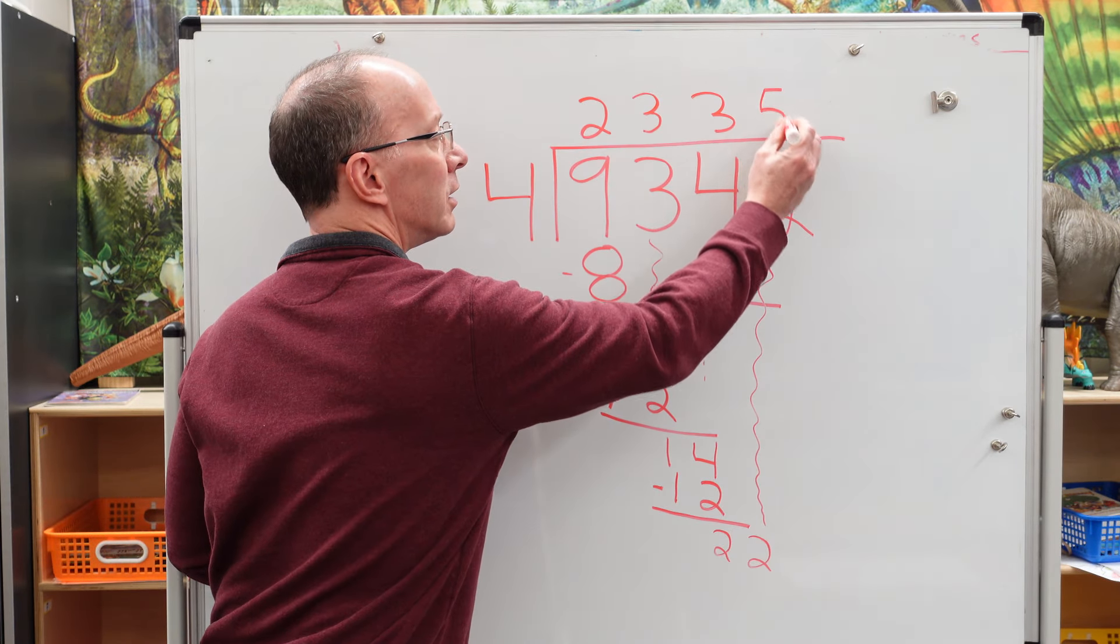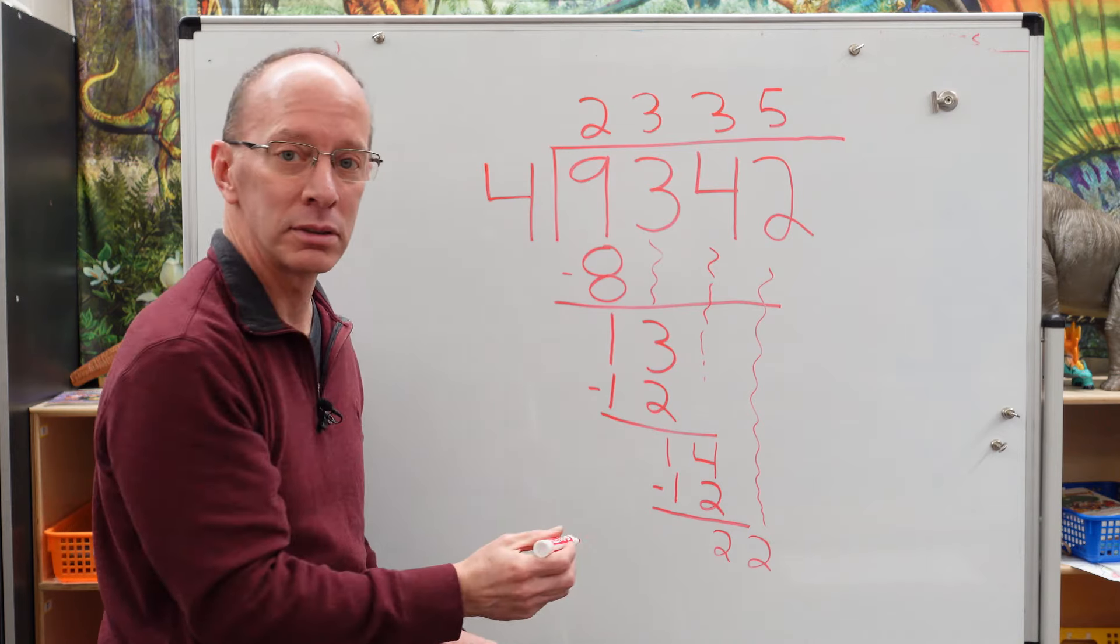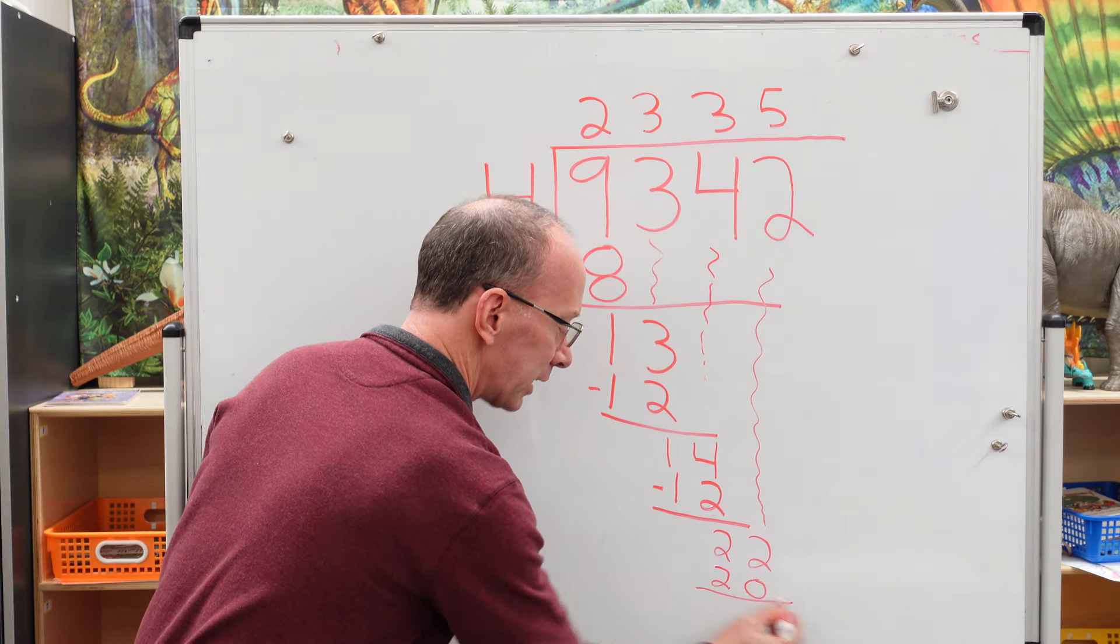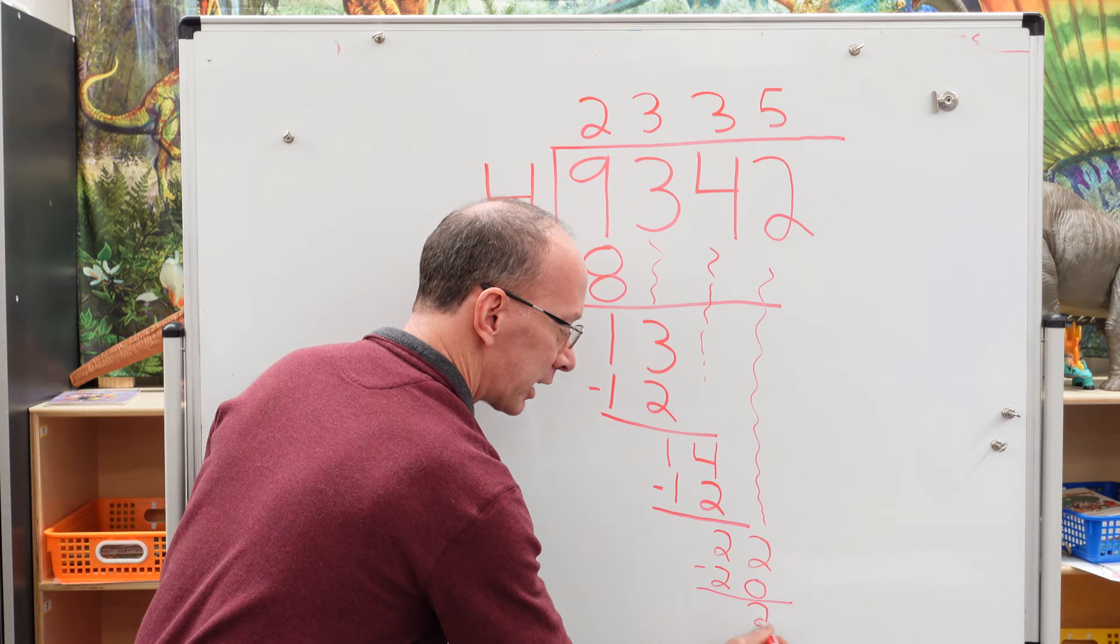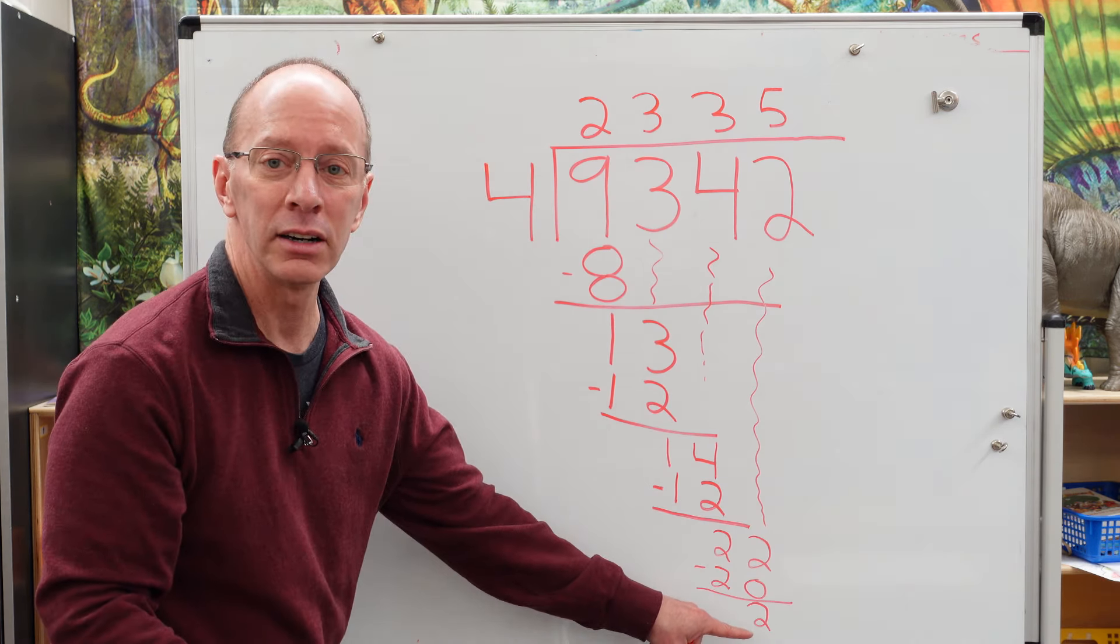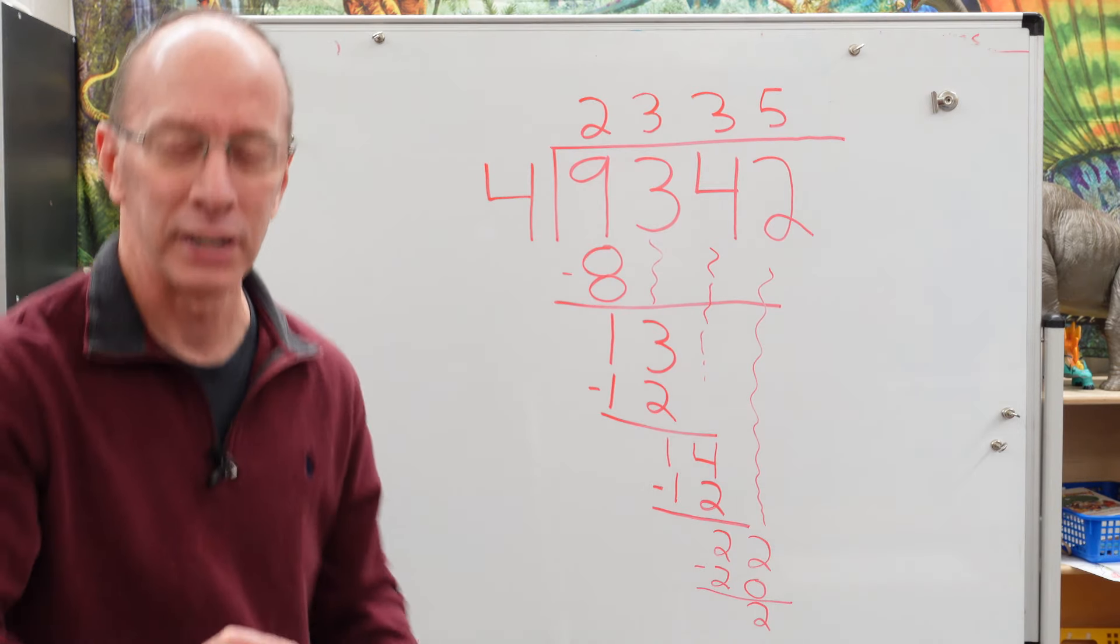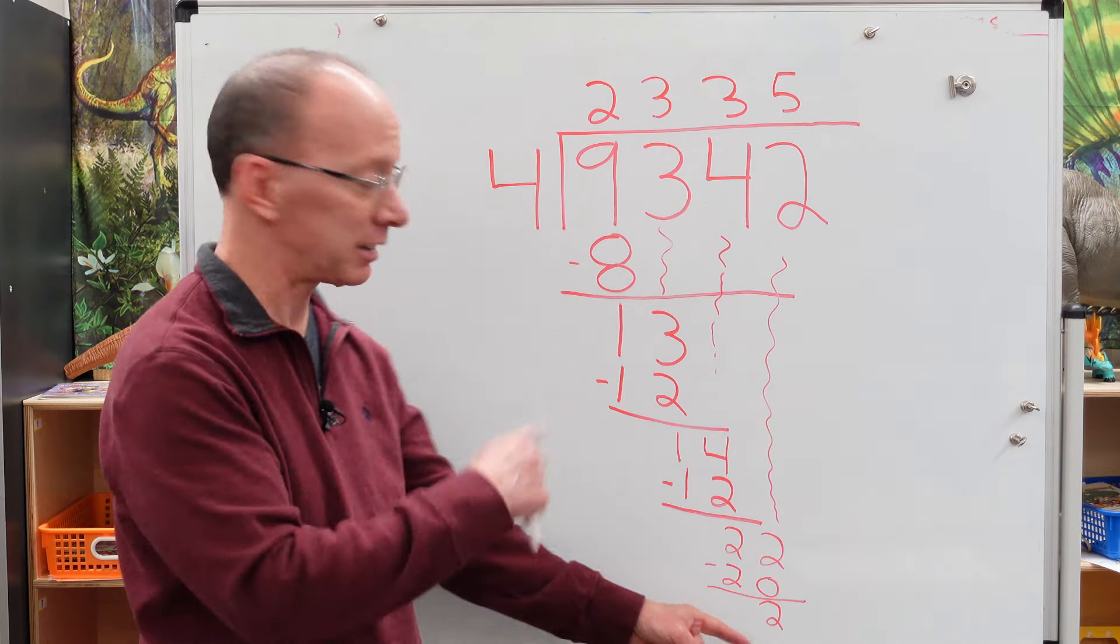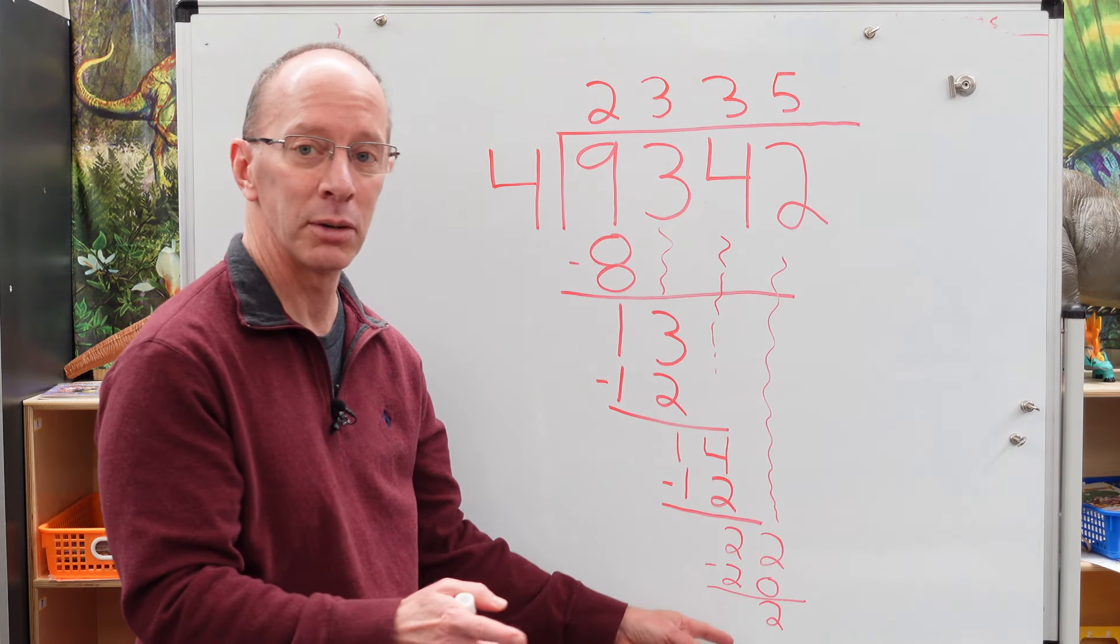So I put the five right here. Five times four equals 20. And we subtract. I hope you can see this on the camera there. We're getting way down on the screen there. And we have a two right here. Oh my goodness. I better bring that screen. I'm going to come over here. So now what I'm going to do is I can't do anymore. I can't drop any other number down.